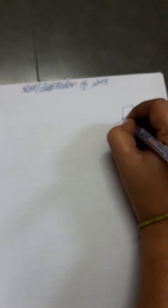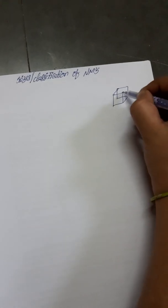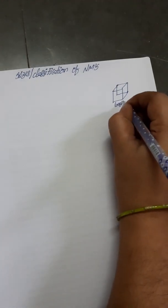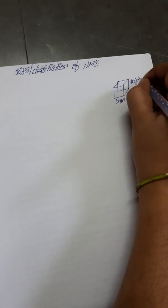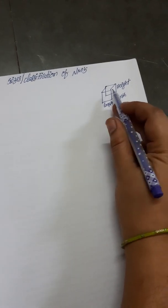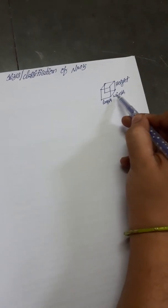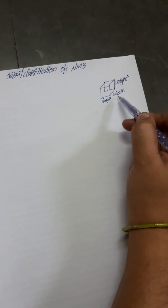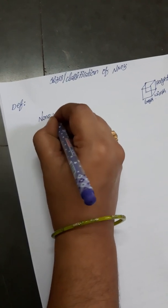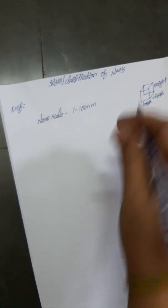First we will draw the structure of the nanomaterial. Dimensions are nothing but length, width, and height. For every nanomaterial there will be three dimensions: length, width, and height. At least any one of the dimensions should be within the nanoscale, otherwise at least one dimension should be less than 100 nanometers. Nanoscale ranges from one to one hundred nanometers.